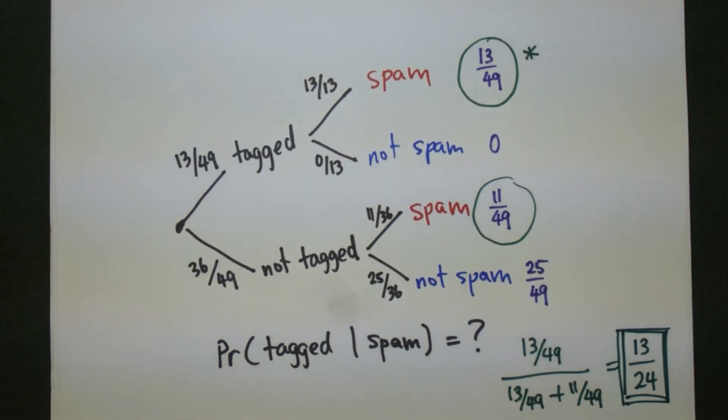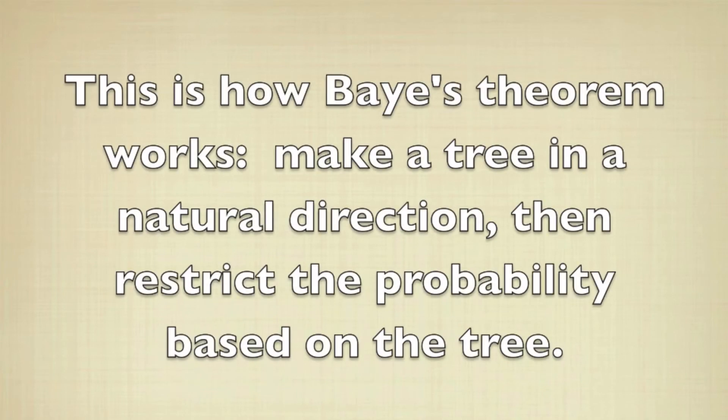This is essentially what Bayes Theorem is saying. If we want to do a conditional probability, but the tree is moving in the wrong direction, we're going to make a tree in the right direction and look at the probability given the restricted sample space that we're looking for.